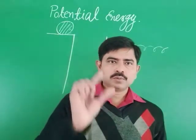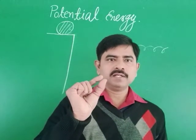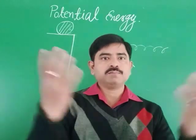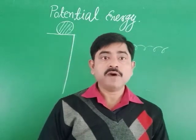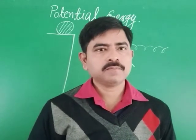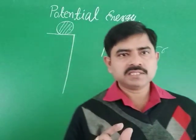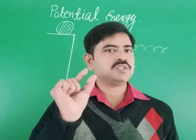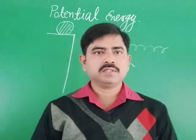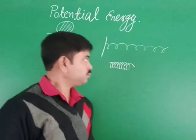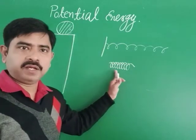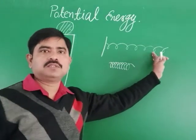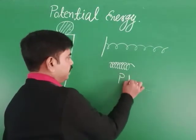What happens when you compress a spring and release? You will find it jumps. From where does it get energy? When you compress it, its shape changes, and due to change in its shape, some energy is stored in that spring — as potential energy. So, energy possessed by a compressed spring or a stretched spring is potential energy.